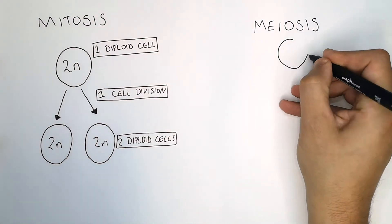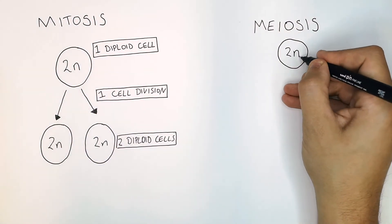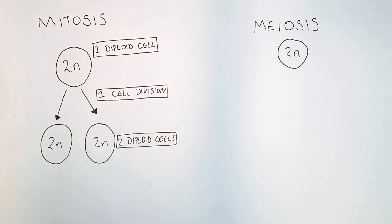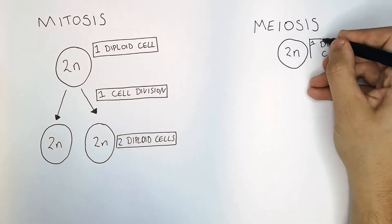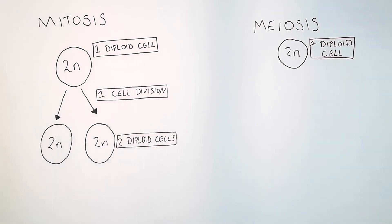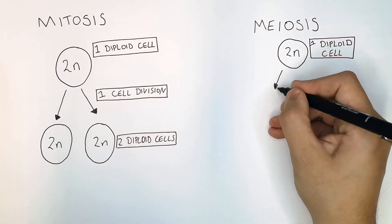Meiosis is different. However, it starts off with one diploid cell with two sets of chromosomes, so one diploid cell which has got two sets of chromosomes. And this diploid cell will divide.